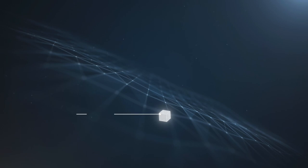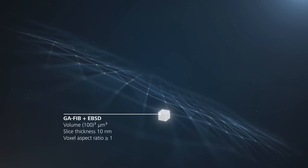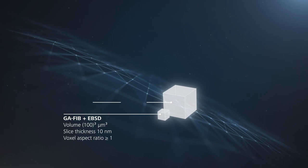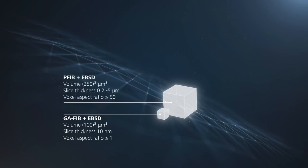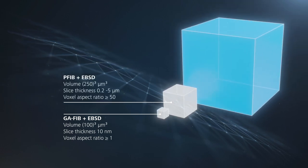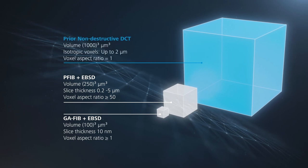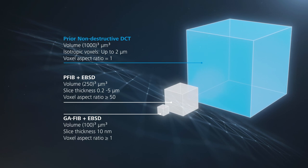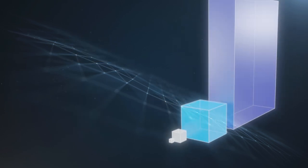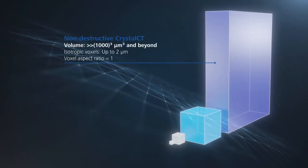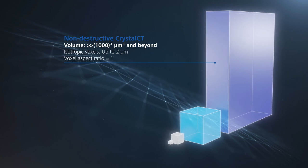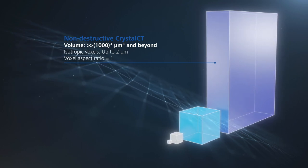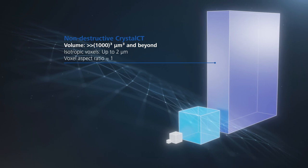Serial sectioning methods combined with EBSD provide high-resolution grain maps but generate limited sample volumes. True sample representivity can only be achieved by obtaining substantial sample volumes that capture all the characteristics of a sample. Crystal CT unlocks information from massive sample volumes, delivering representative grain and grain boundary statistics at an unprecedented scale.